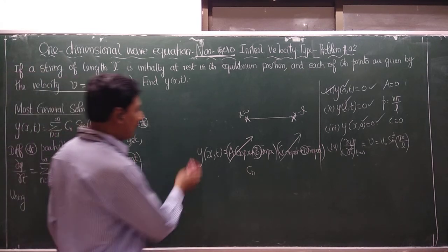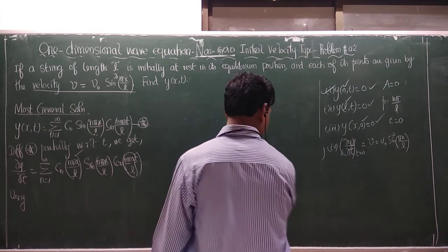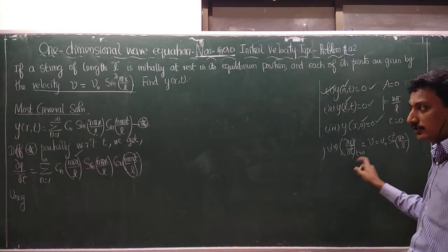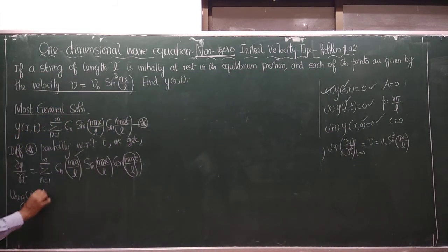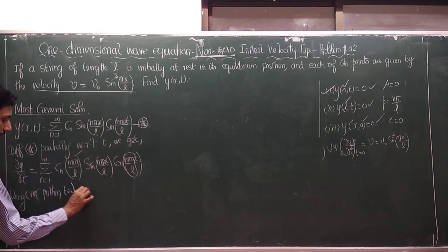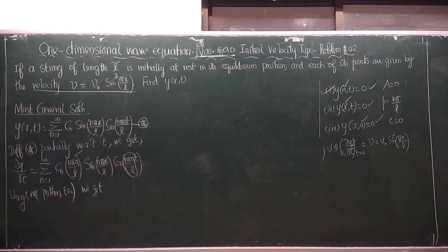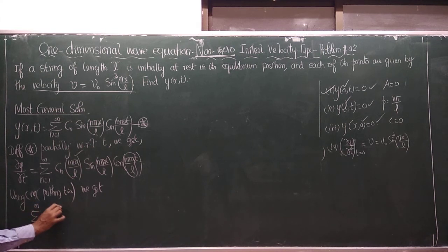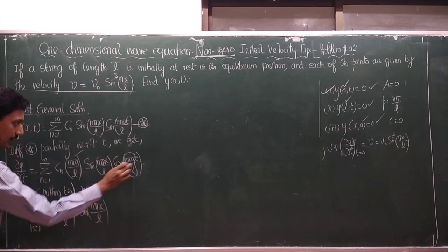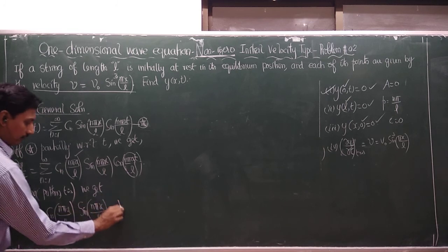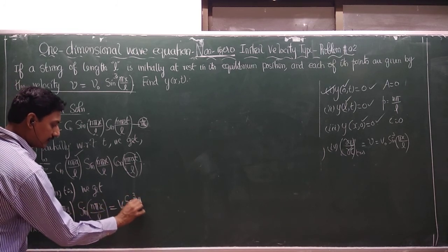Now substituting the fourth boundary condition by putting t equal to zero into the differentiated expression, cos(0) equals 1, so we get: Σ(n=1 to ∞) Cₙ · (nπa/L) · sin(nπx/L) = V₀ sin³(πx/L).